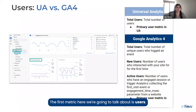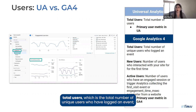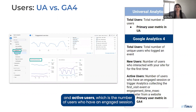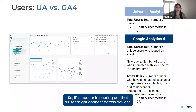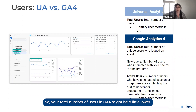The first metric we're going to talk about is users. In Universal Analytics, users is just the total number of users. However, in GA4 there are a couple more metrics: total users, which is the total number of unique users who have logged an event; new users, which is the number of users who interacted with your site for the first time; and active users, which is the number of users who have an engaged session. GA4 uses Google Signals, so it's superior in figuring out that a user might connect across devices — it can connect sessions from a phone and a computer into one user, so your total number of users in GA4 might be a little lower.